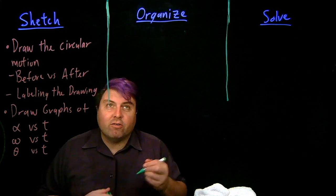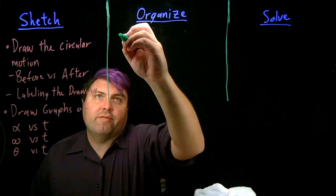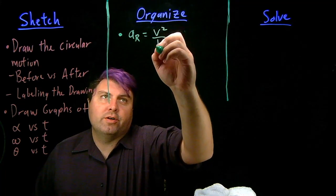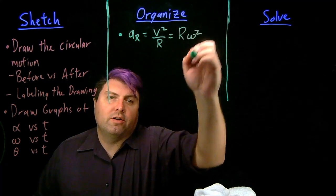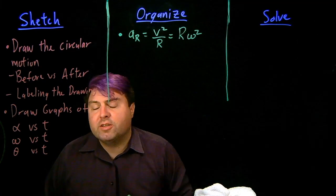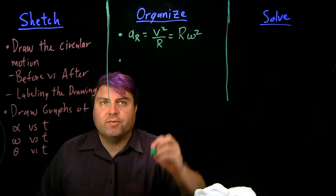Once we have that in our organized step, for all circular motion, we have our equation a sub r is equal to v squared over r equals r omega squared. This is the centripetal acceleration needed to keep things moving in a circle. And then we can ask ourselves a couple different questions.